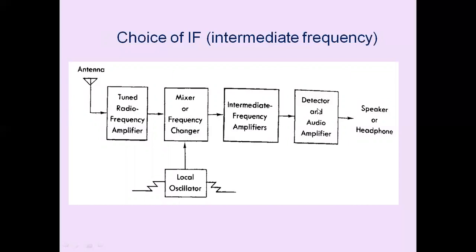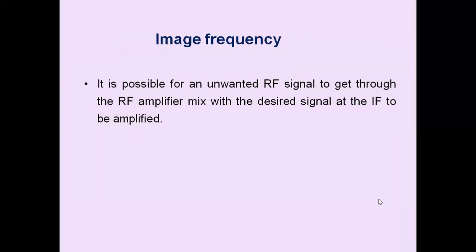The IF signal is applied to a detector to demodulate the signal and recover the original message signal, then to the audio amplifier and power amplifier to increase the signal level, and finally to the speaker and headphone to recover the original sound. The choice of IF — how much IF frequency to select — depends on certain parameters. Even though the superheterodyne receiver provides many advantages, there is a problem with image frequency, which is an unwanted frequency picked up by the receiver.